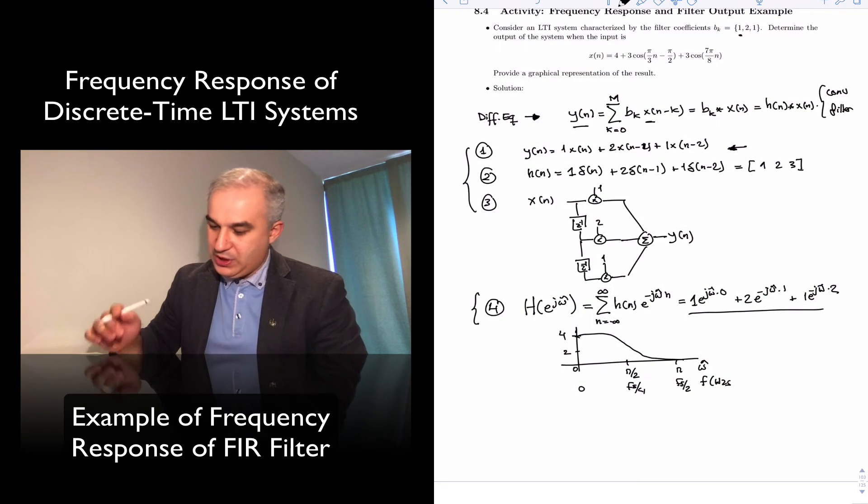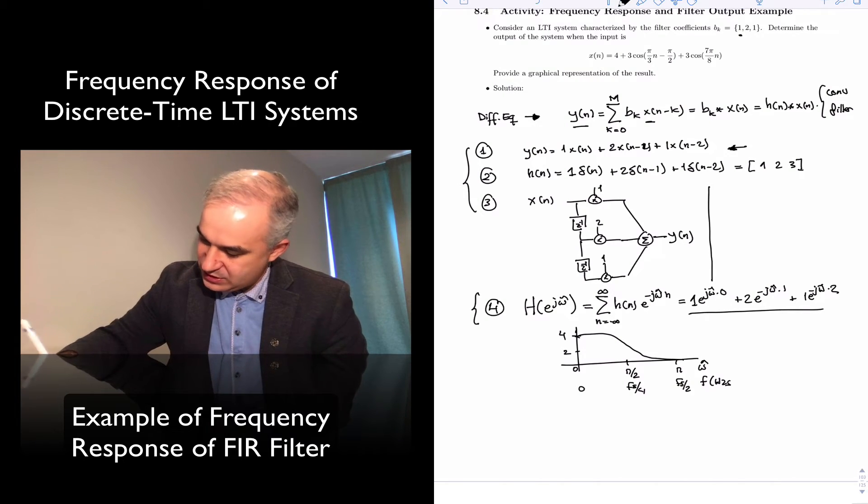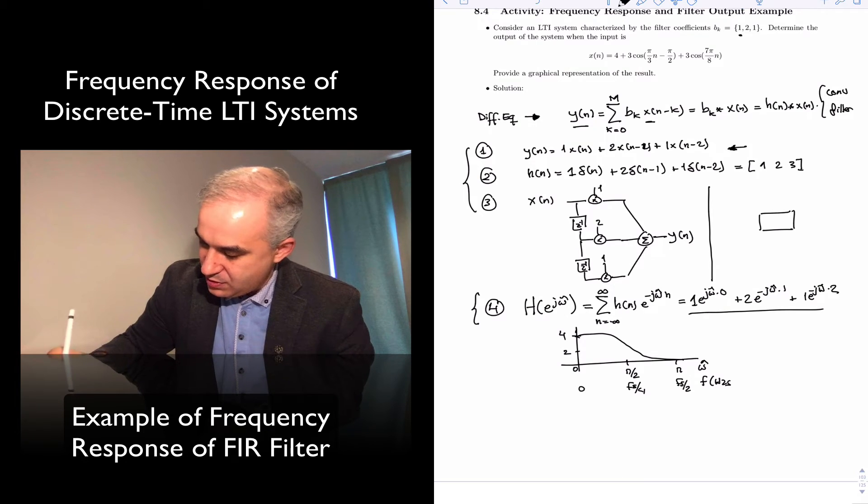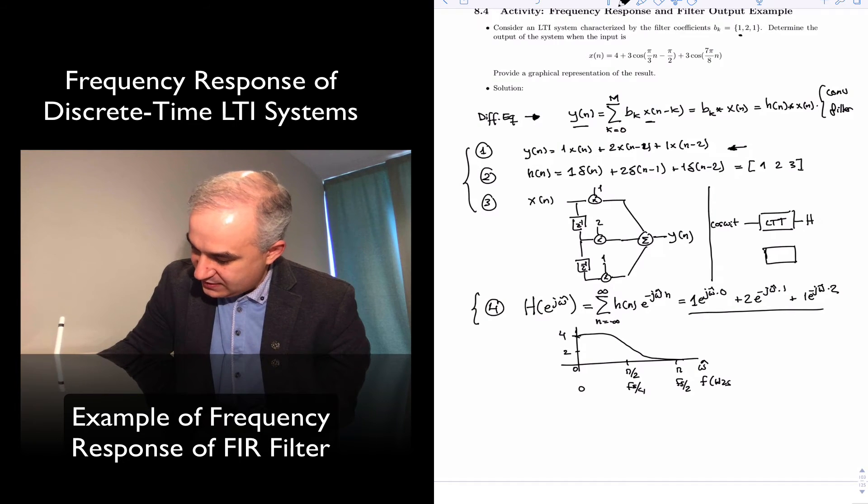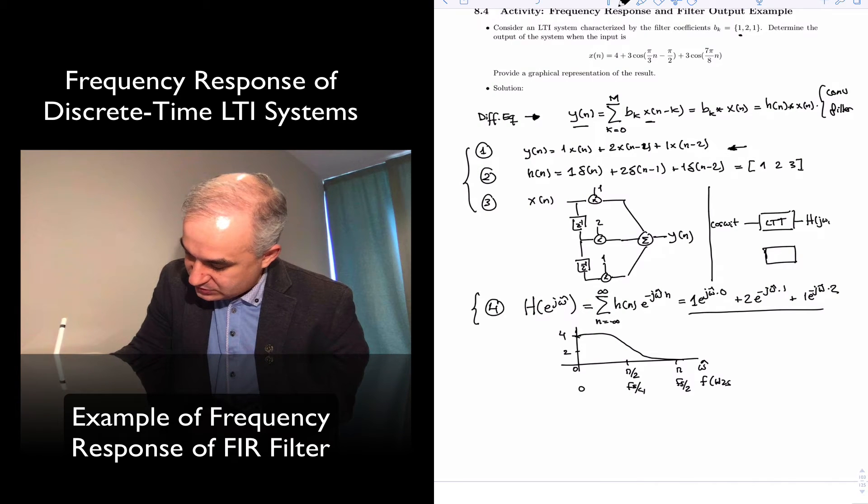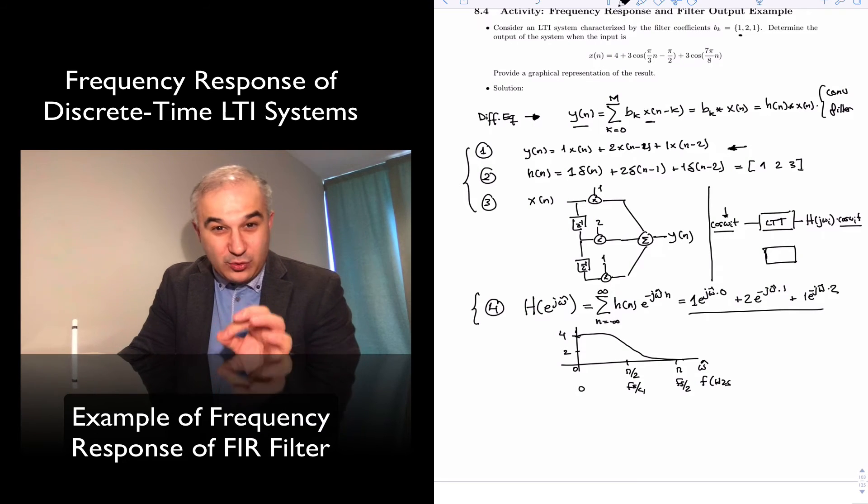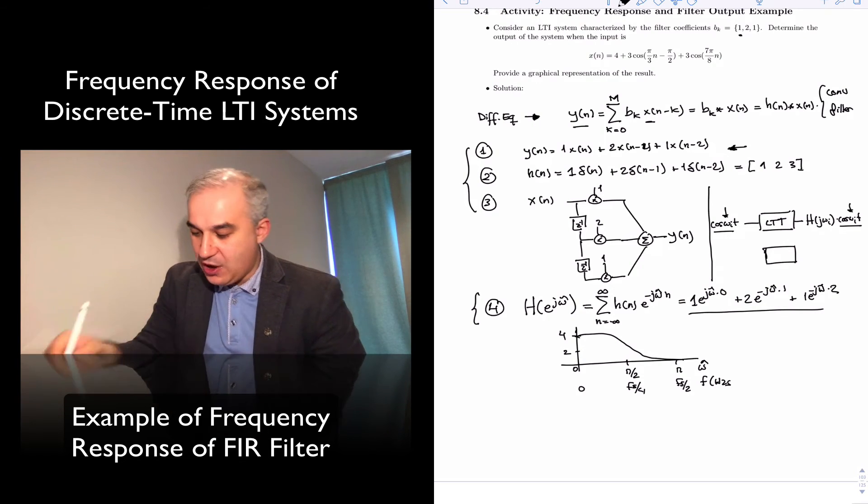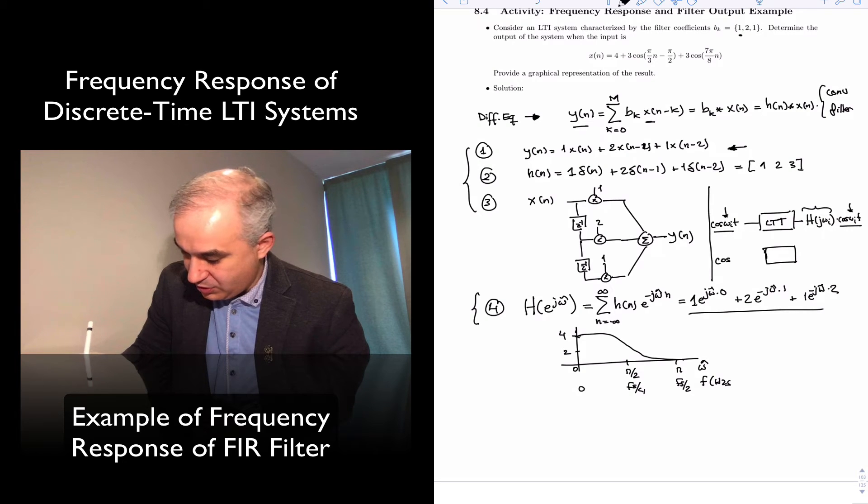We know if the system is LTI, we're going to do it for continuous and for discrete. If we have a cosine of omega I T, my output is going to be the frequency response evaluated at that point, times cosine of omega I T. Meaning, if I have a cosine at the input, I'm going to have a cosine at the output. If I have a particular omega at the input, I'm going to have a particular one at the output. But the amplitude and the phase is going to be changed by the frequency response. Or, in discrete time, omega hat N, same thing.